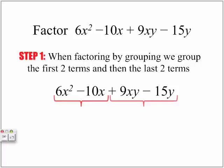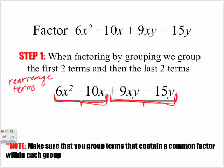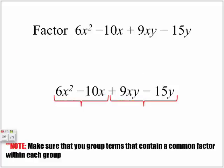Here are the first two terms, and here are the last two terms. One thing to keep in mind: make sure that you group terms that contain a common factor within each group. Within the first group, make sure there is some kind of common factor. Within the second group, there should be a separate common factor. If there is no common factor, rearrange the terms to find one. But because there is one in all these four-term polynomials, there is no need to rearrange the expression.